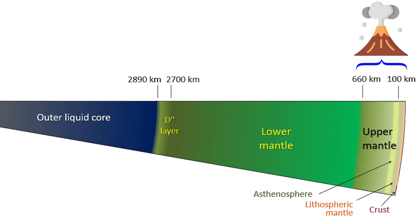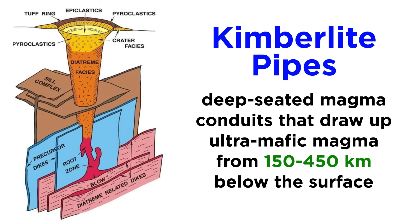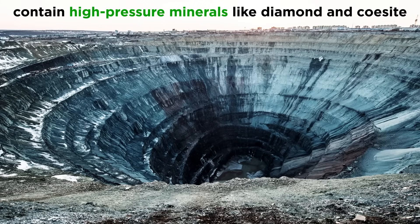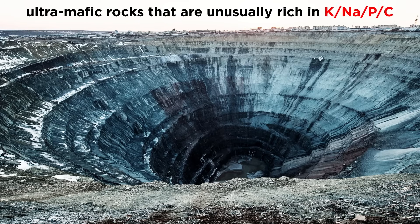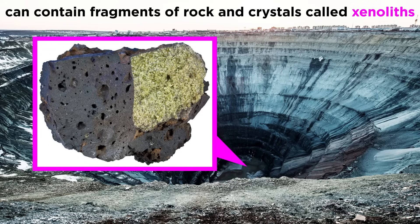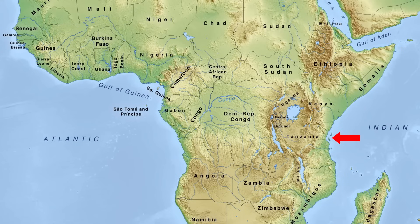Most of the material erupted from volcanoes comes from the upper mantle and lower crust, but there are cases where deeper material can get dragged to the surface. Kimberlite pipes are deep-seated magma conduits that draw up ultramafic magma from 150 to 450 kilometers below the surface, and exhibit violent explosive eruptions that rapidly carry mantle material to the surface. Kimberlites often contain diamonds and other high-pressure minerals like coesite, a polymorph of quartz, and have an unusual chemistry being rich in potassium, sodium, phosphorus, and carbon. Kimberlites can also contain fragments of rock and large crystals called xenoliths, providing geologists with their only physical samples of the lower asthenosphere. The most recent kimberlite eruption occurred 10,000 years ago in Tanzania.